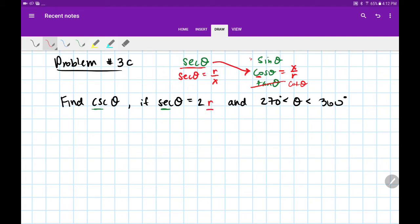So this is r/x. If I have just sec(θ) = 2, then I need to fill in the over 1. 2 and 2/1 are the same thing. So now we know that r is 2, x is 1, and we have to draw it in the proper quadrant. Between 270° and 360°, we're dealing with quadrant 4.